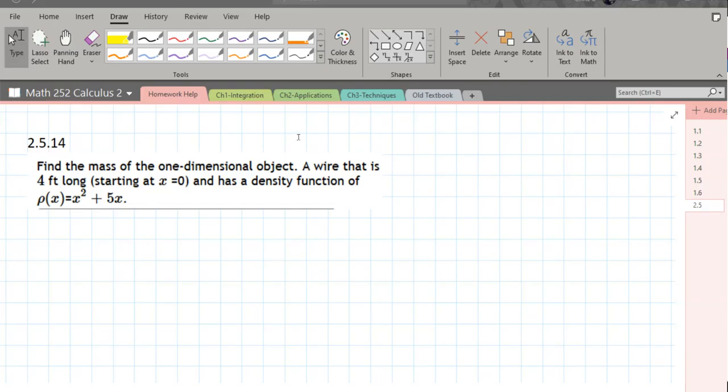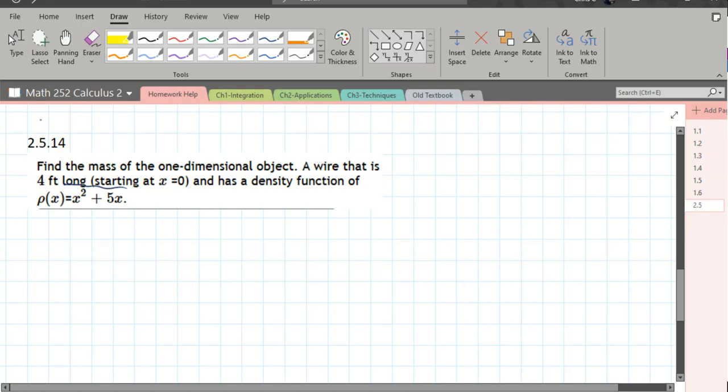We're going to find the mass of a one-dimensional object, and this is given a density function right here. This letter looks like a P, but it's actually a rho. Hopefully I spelled that right. It's a rho, it's a Greek letter.